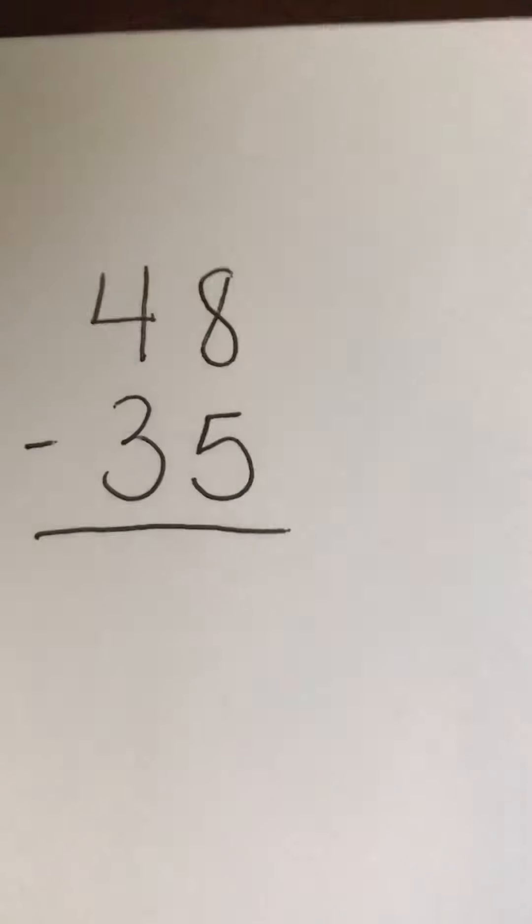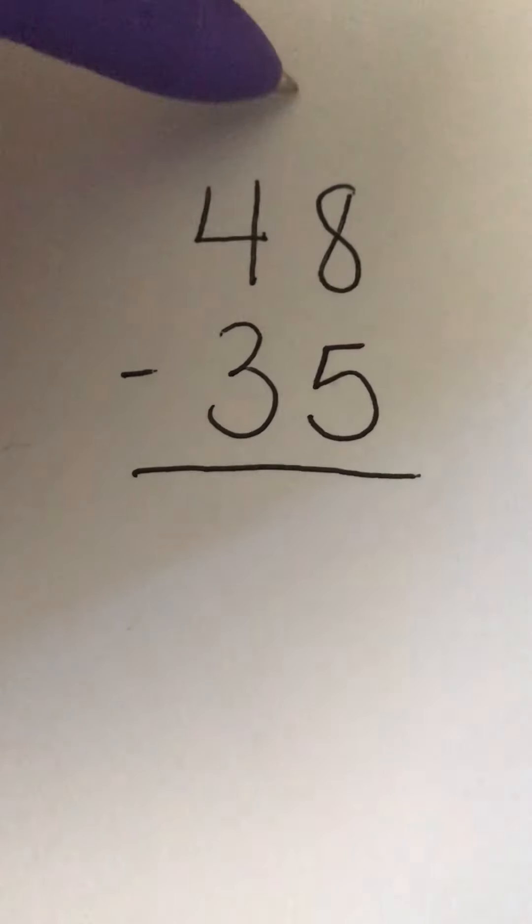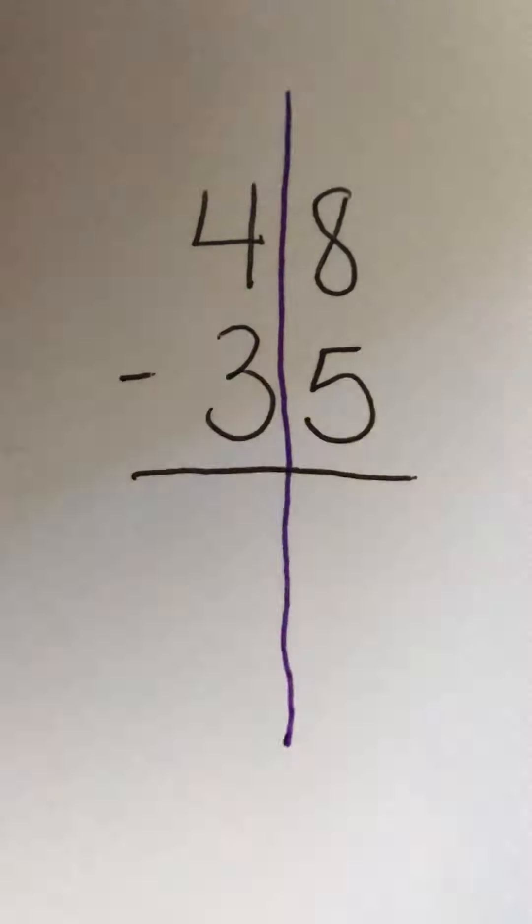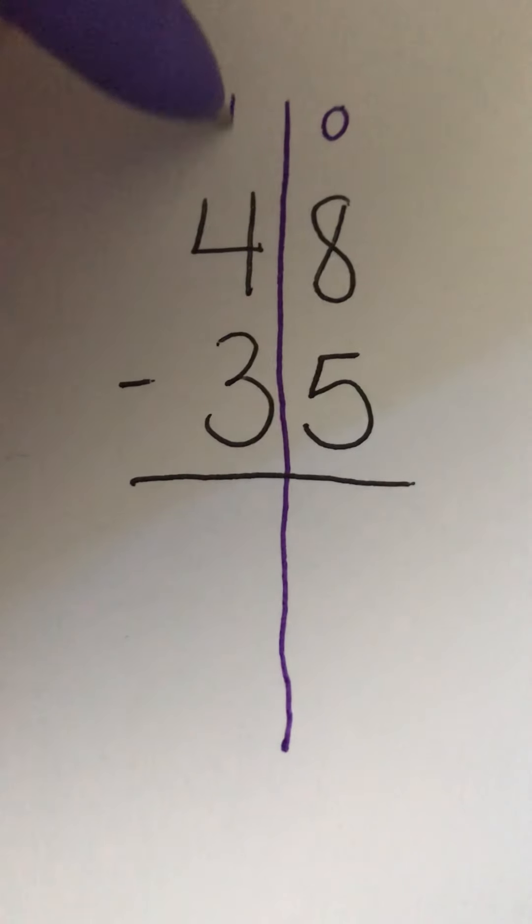Let's do a couple more. 48 minus 35. I'm going to draw my line down. Ones place and tens place.